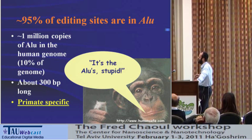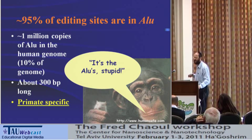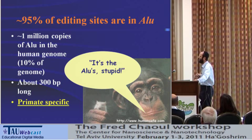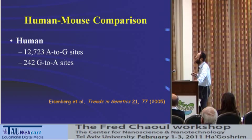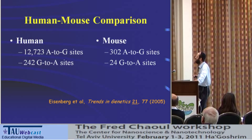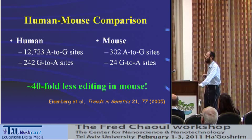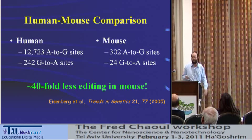Is there anything special about the ALU sequence that makes it so editable? We have 15,000 or 50,000 editing sites — what happens in other species? When we did the same analysis for mouse, this protocol gives 30,000 sites in human but only 300 sites in mouse — about a 40-fold difference between human and mouse. For people from biology, mouse and human are about the same except for the tail, so finding something 40-fold different between them is a big story.